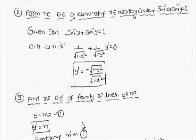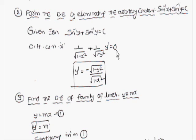Next example: form the differential equation by eliminating the arbitrary constant from sin⁻¹x + sin⁻¹y = c. There is one arbitrary constant c, so differentiate one time. Differentiating gives 1/√(1−x²) + (1/√(1−y²))·y′ = 0. Observe that c has already been eliminated. Therefore y′ = −√(1−y²)/√(1−x²), which is the differential equation of the given relation.